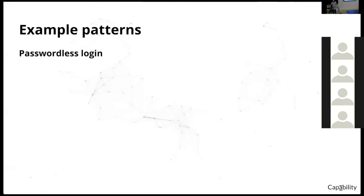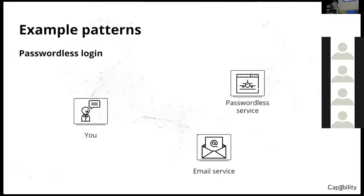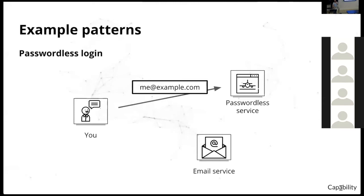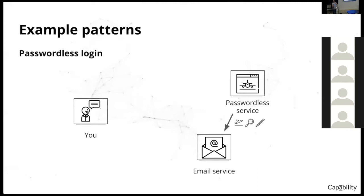One more familiar example is passwordless login. Imagine there's you, a passwordless service, and an email service. Instead of giving a username and password, you provide your email, and the service emails your capability to log in via a one-time link. If you're familiar with Slack's magic link, that's an example of a capability. But you've been using capabilities way longer than that — any email reset link you've ever gotten is a capability to reset your password. Passwordless login is just using that same flow every single time.